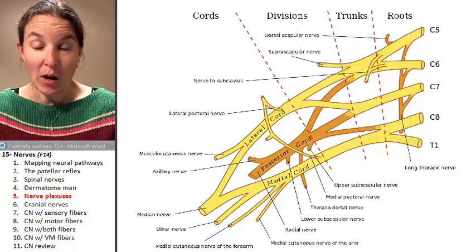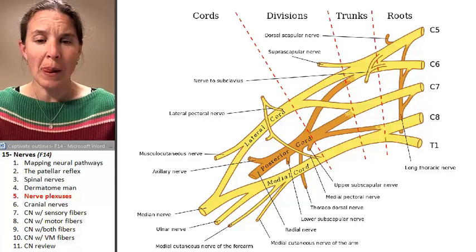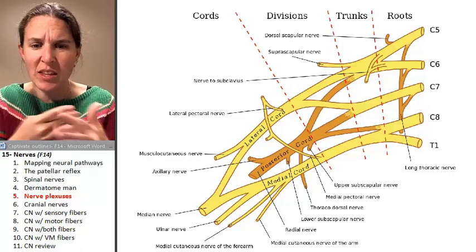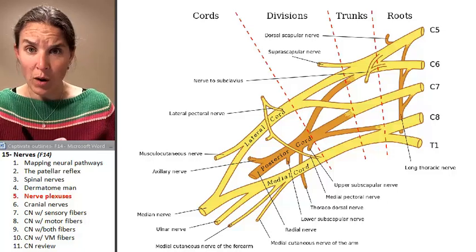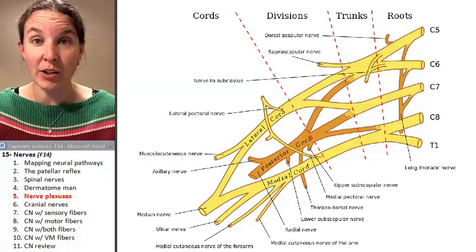Nerve plexuses are basically braids or interminglings of spinal nerves with each other to form peripheral named nerves like the sciatic nerve.